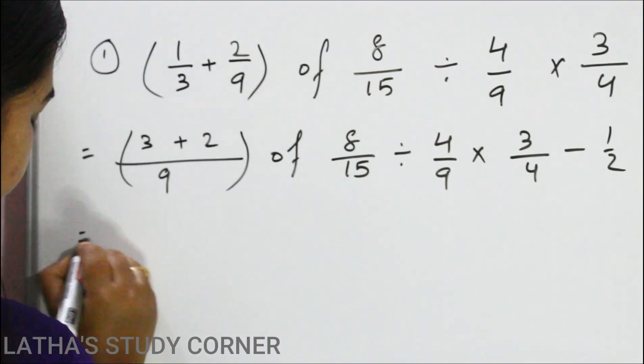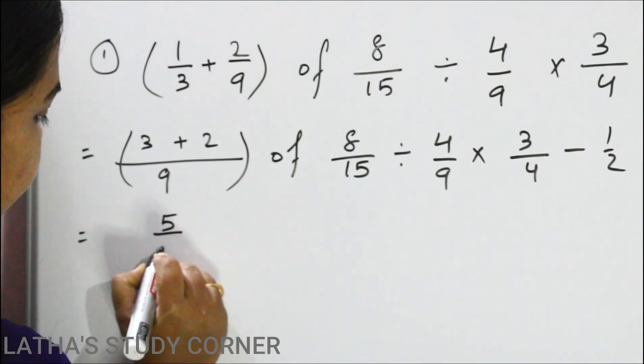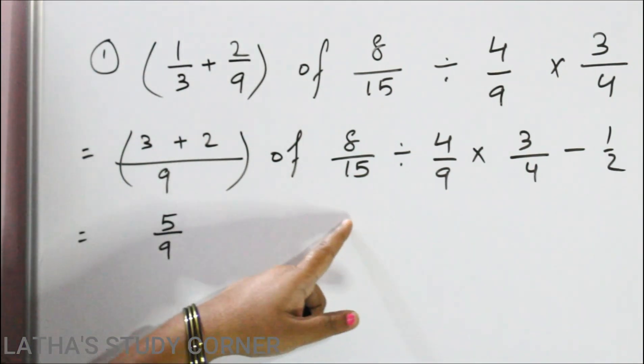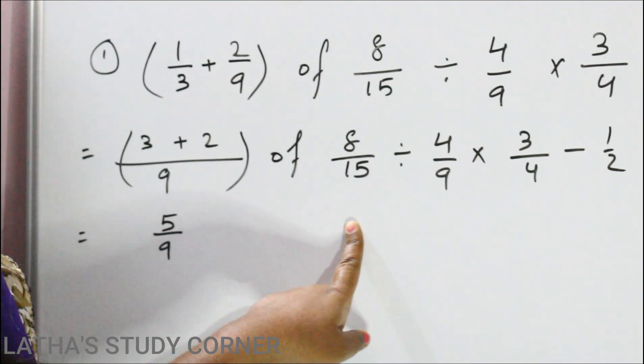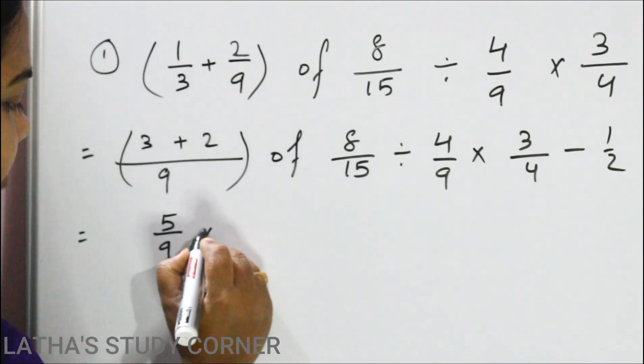Now next is what? Its value is 5 by 9. Off. Off means multiplication. In place of off we can write multiplication sign.